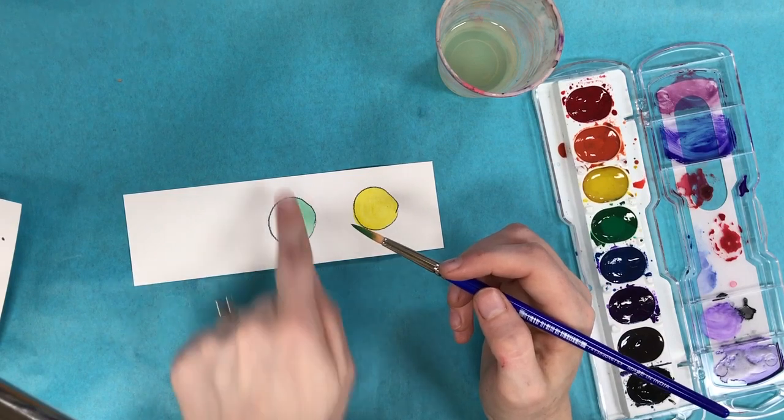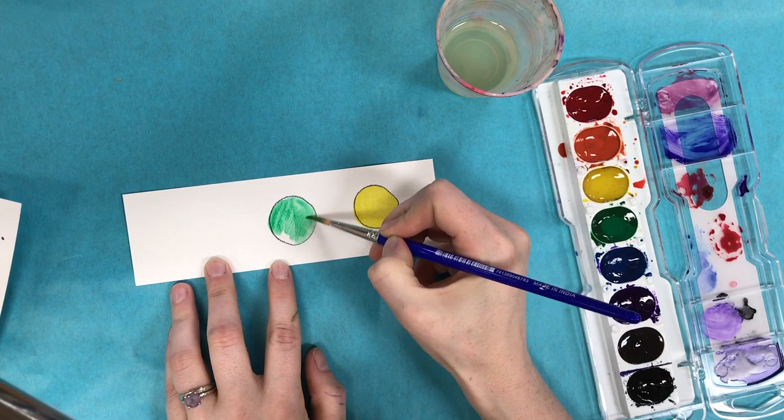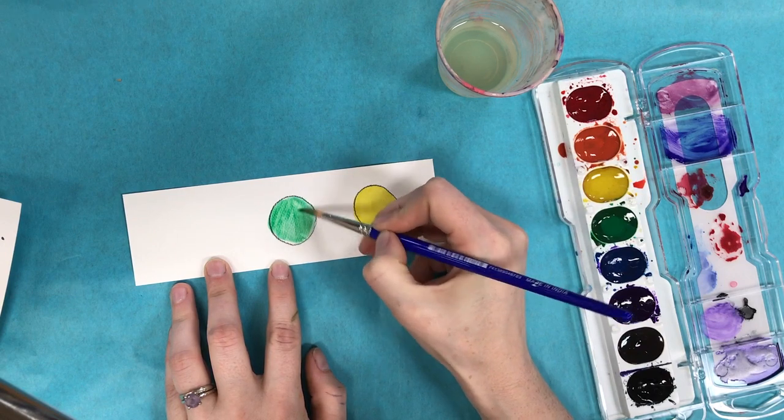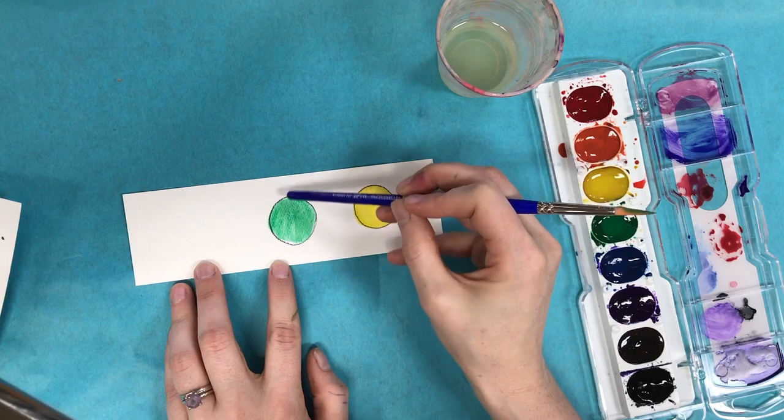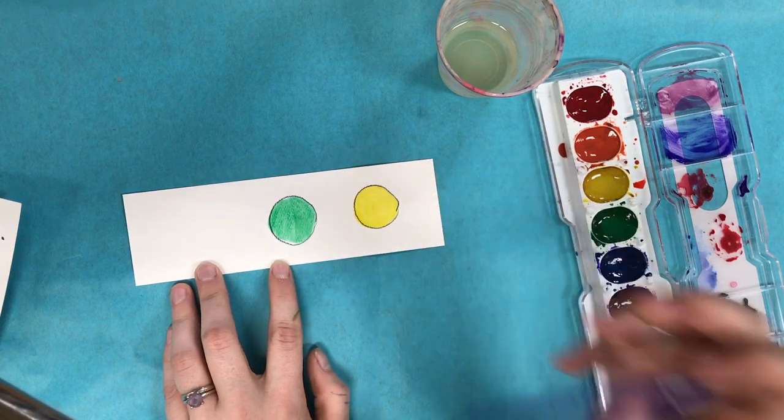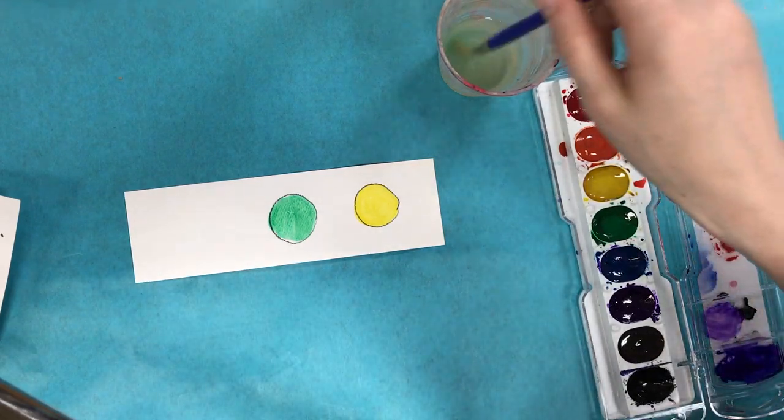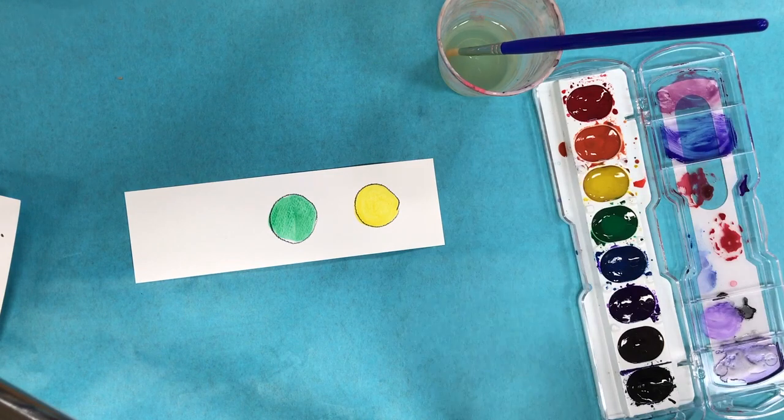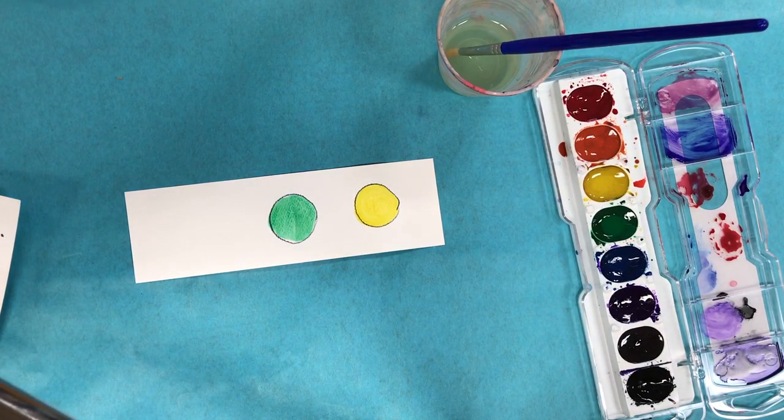So earlier I let this dry, so now when I go to fill this in, that line is always going to show up. You can see there's a hard line there that shows up in the green paint and I don't want those hard lines. So whenever I am filling in an area, I want to make sure that I fill in the entire area without stopping and letting it dry.